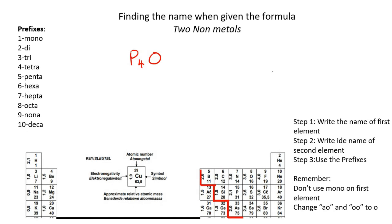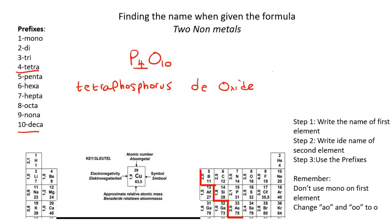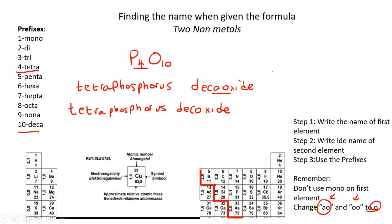So for P₄O₁₀, step one: write down the name of the first element — that is phosphorus. Step two: write the IDE name of the second element — that's oxide. Now we use the prefixes. The 4 gives us tetra, so we say tetra phosphorus. The oxygen has a 10, so that's deca. Now that sounds a bit weird — decaoxide. When you have an A and an O next to each other, we just change it to a single O. So instead of decaoxide, it becomes decoxide, giving us tetraphosphorus decoxide.